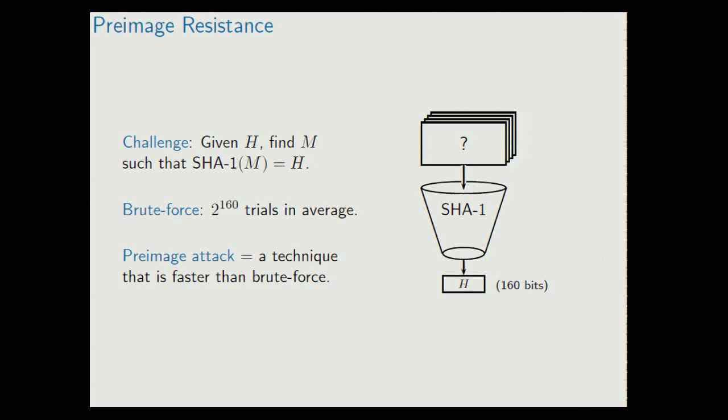We are given some hash value of 160 bits and we try to find a message that maps to this hash value. By brute force, we would require about 2 to the 160 trials in average. And any technique that can find a pre-image faster than this is called a pre-image attack.